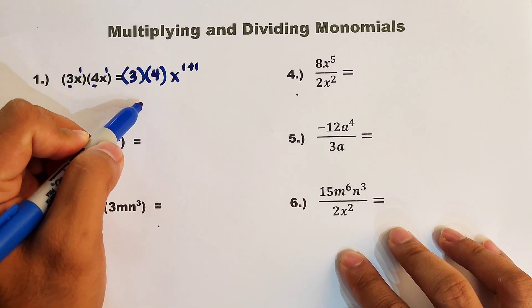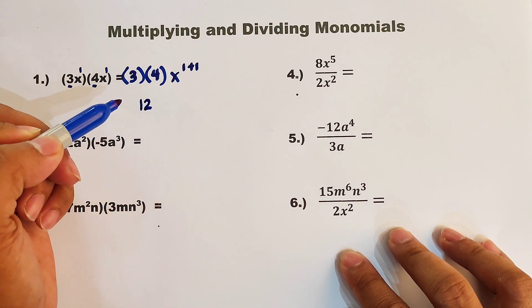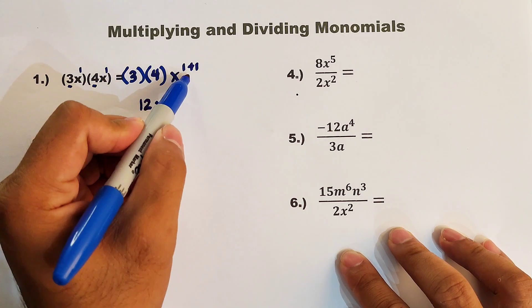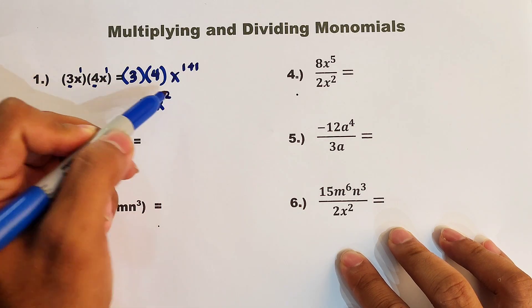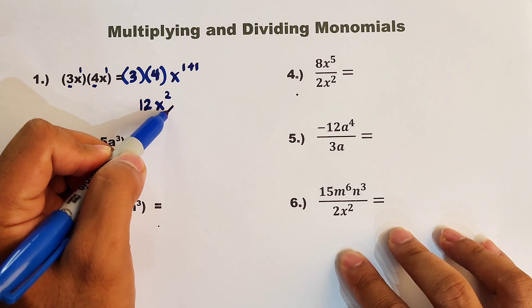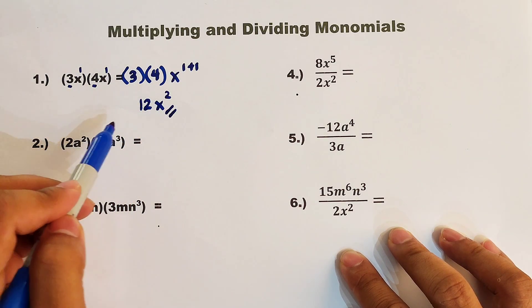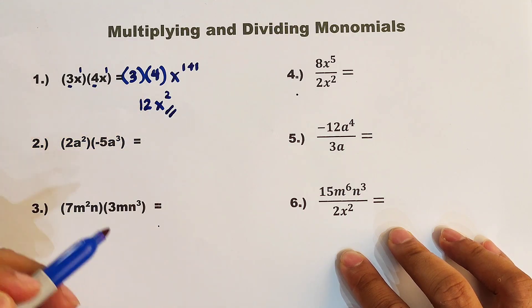So 3 times 4, that is equal to 12. Then as for the variable, copy your variable x and then simplify, that is 2. Meaning, the correct answer or the product for number 1 is simply 12x raised to the 2nd power.